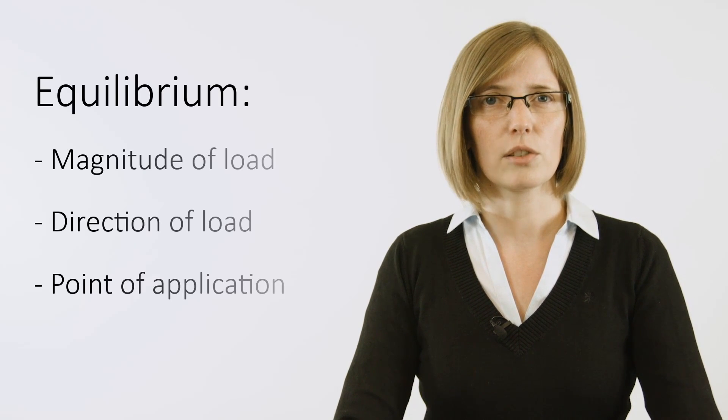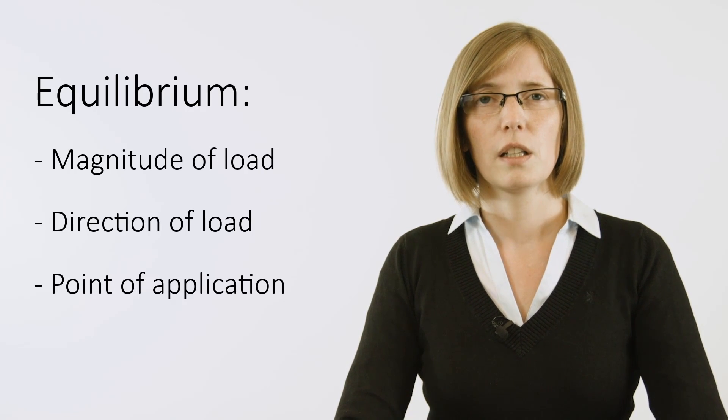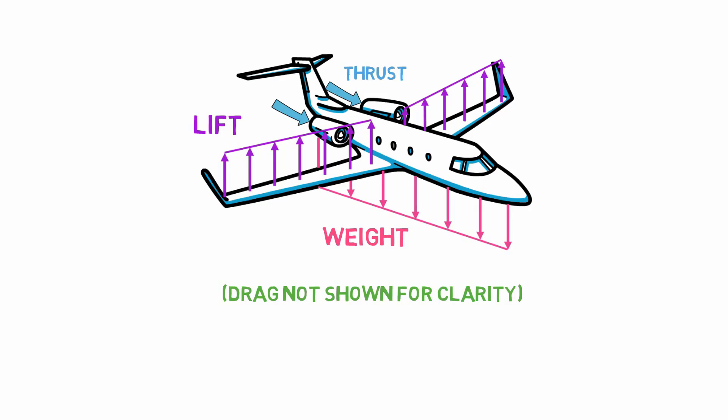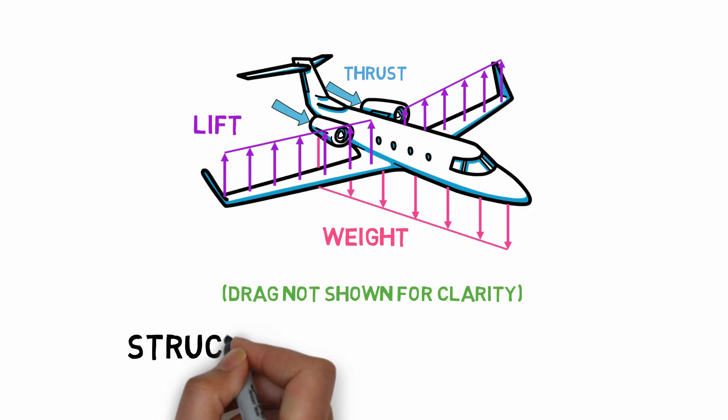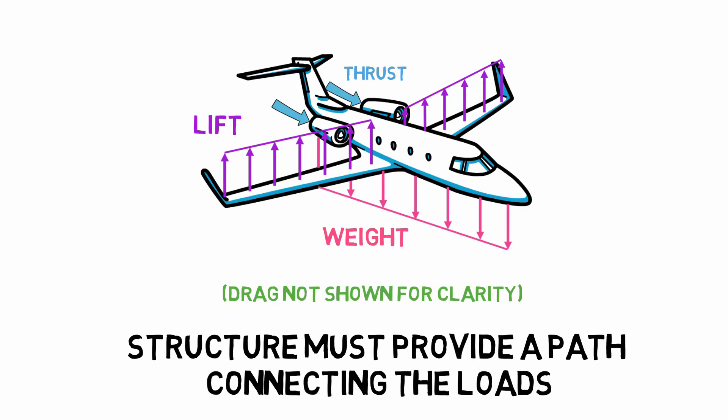Keeping in mind that this aircraft is in steady-state flight, we are looking at a structure in equilibrium. When looking at equilibrium, the point of application of the forces is also very important. We need to assess not only the magnitude and direction of the load but also the point of application. Since the point of application is different for the different forces acting on the structures, they are not aligned, and the structure needs to provide a load path to transfer the loads. The load path links the application of one applied force to the forces elsewhere that provide equilibrium.